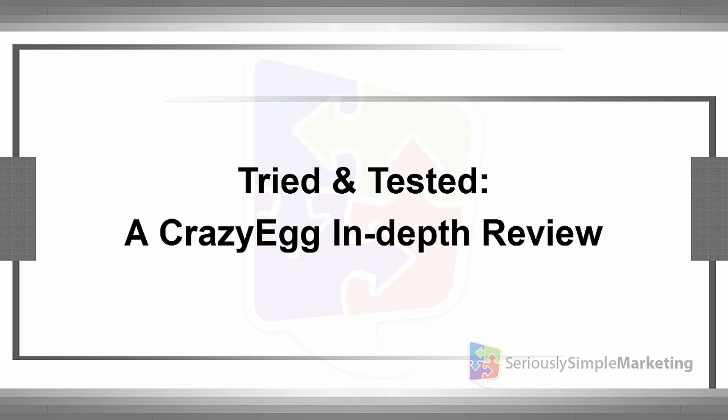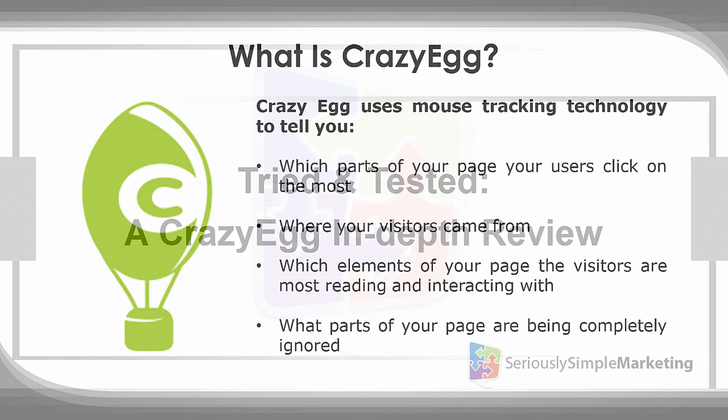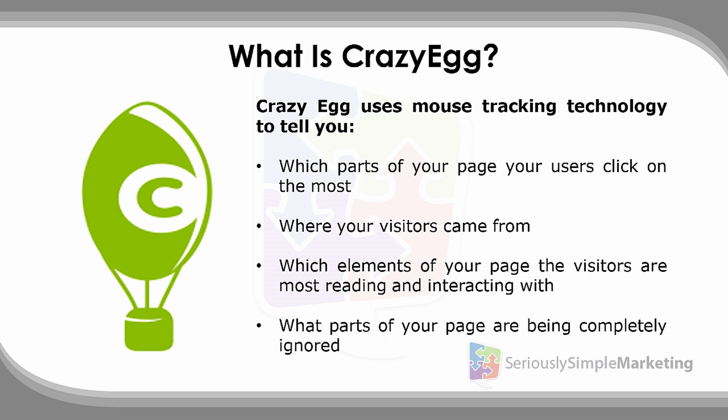In this video, it's another tried and tested review — this one's all about something called Crazy Egg. Crazy Egg uses mouse tracking technology, and when we say mouse, it's anything that interacts with the screen. On a desktop it's a mouse; on a smartphone or tablet it tracks touch — where people are actually touching, scrolling, and clicking using their fingers or thumbs. Crazy Egg tracks all of that and gives you data.